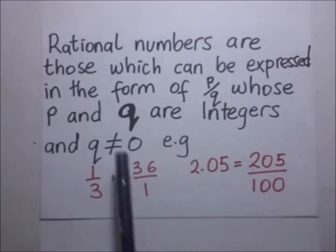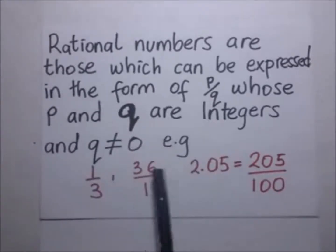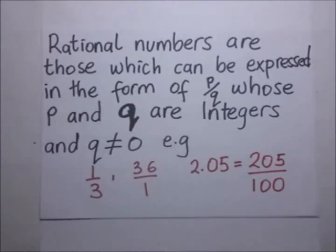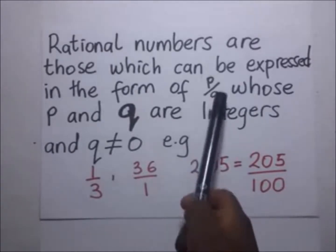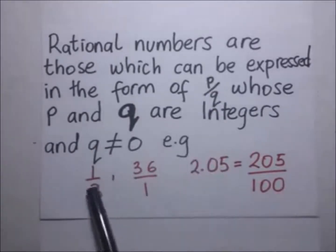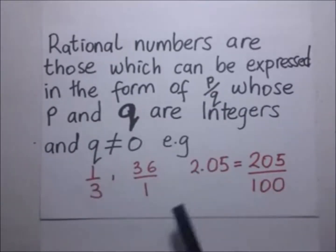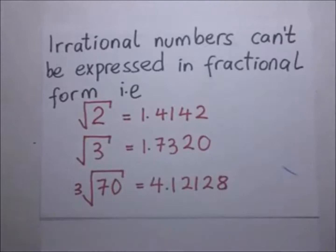Now these are rational numbers. The opposite of these are irrational numbers, which are simply those that cannot be expressed in this form — they cannot be expressed as fractions.